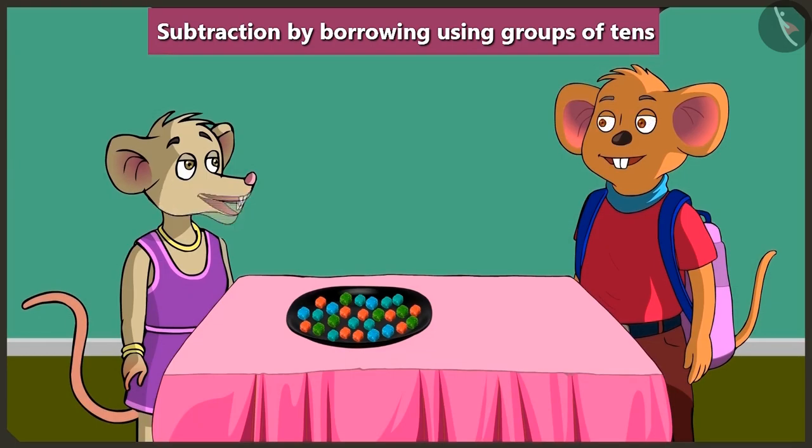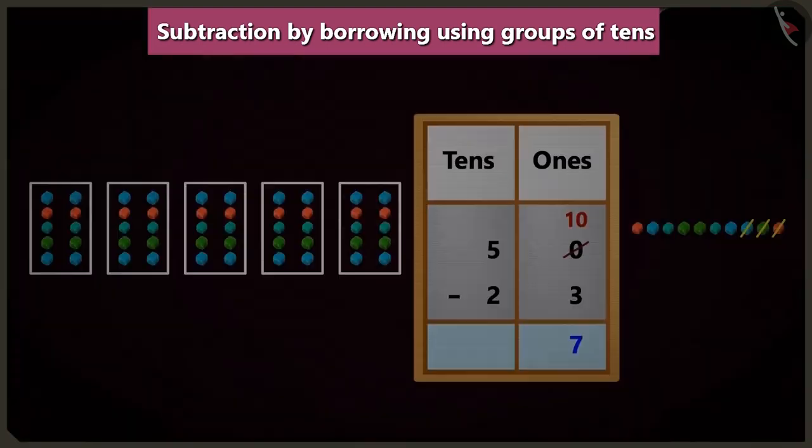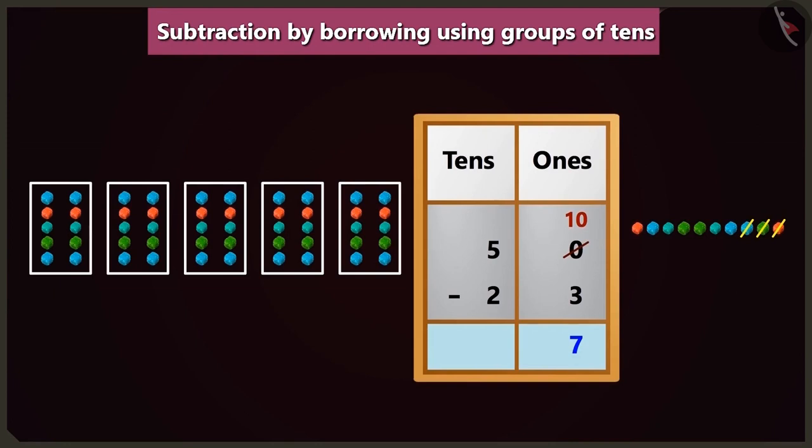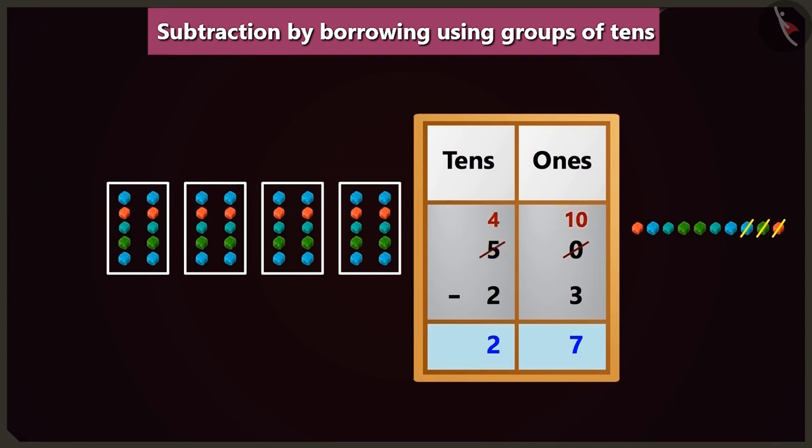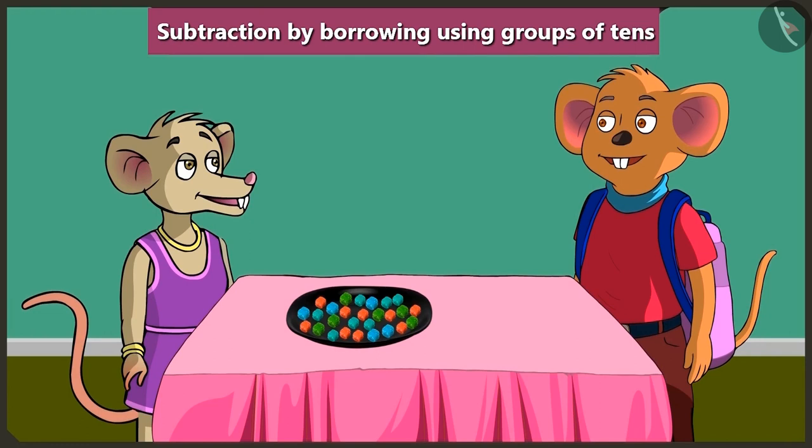Yes. Now I have understood it well. Thank you so much, Choo-Choo. Look, Chi-Chi, in subtraction, whenever we borrow ten from a digit, we have to reduce that digit by a ten. Yes, Choo-Choo. From now on, I will remember that.